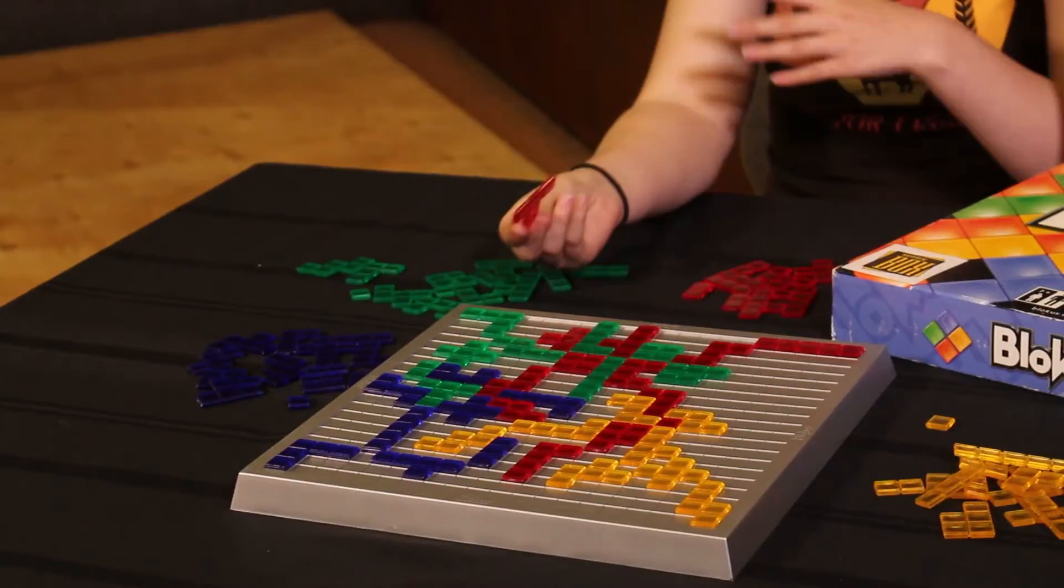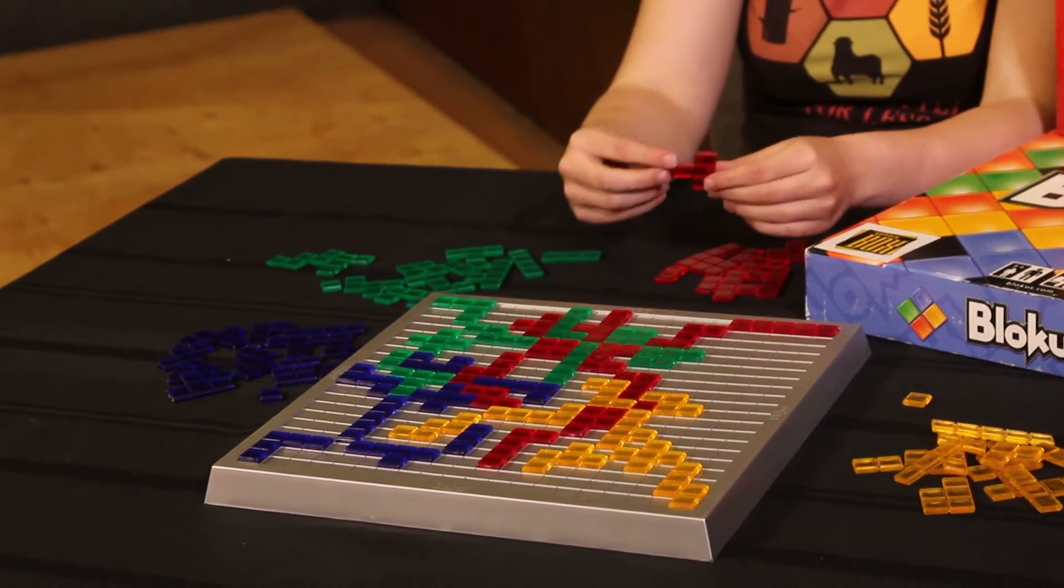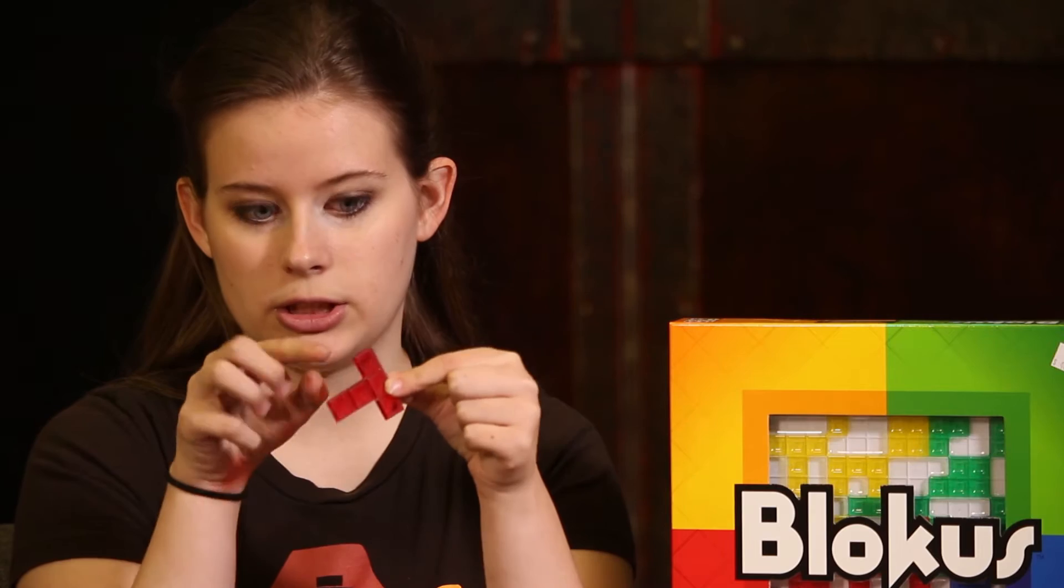So how you play is you have a certain amount of pieces and you need to get all of them on the board, and as you can see that becomes a little more difficult. The way you place pieces is the corners have to touch. No straight edges can be touching your own piece.